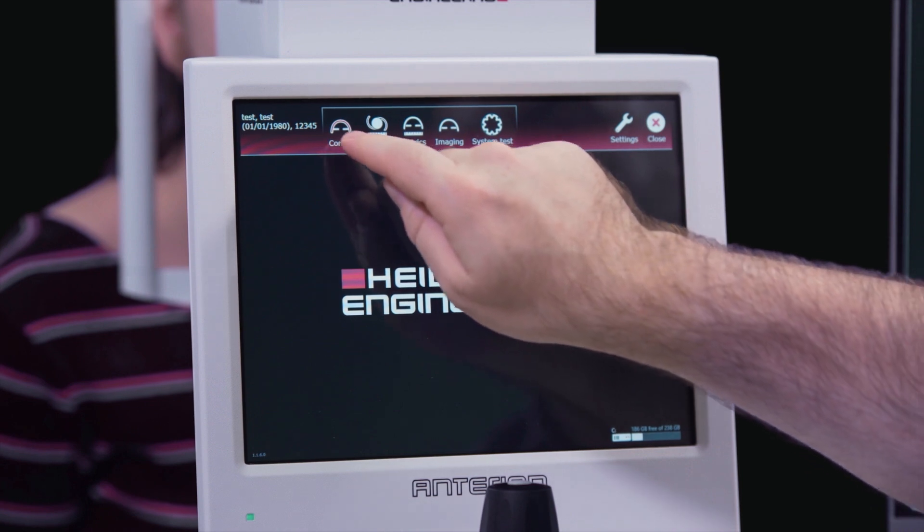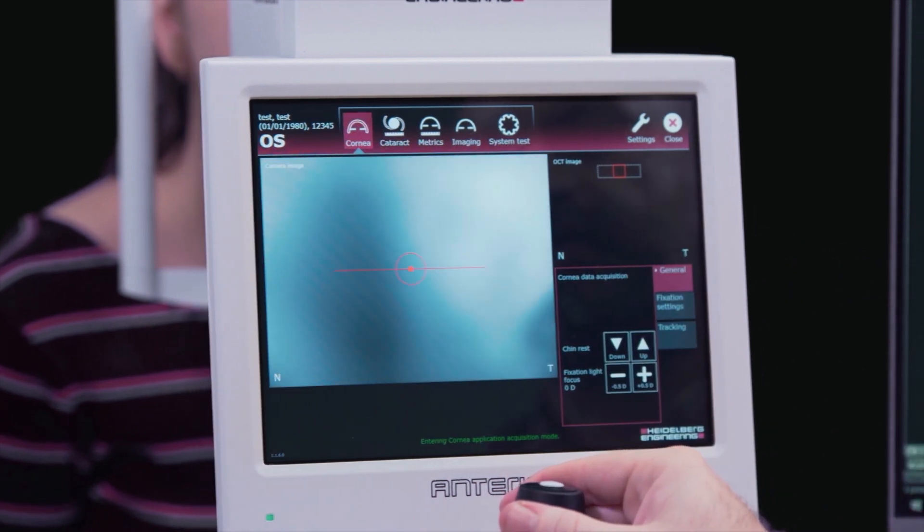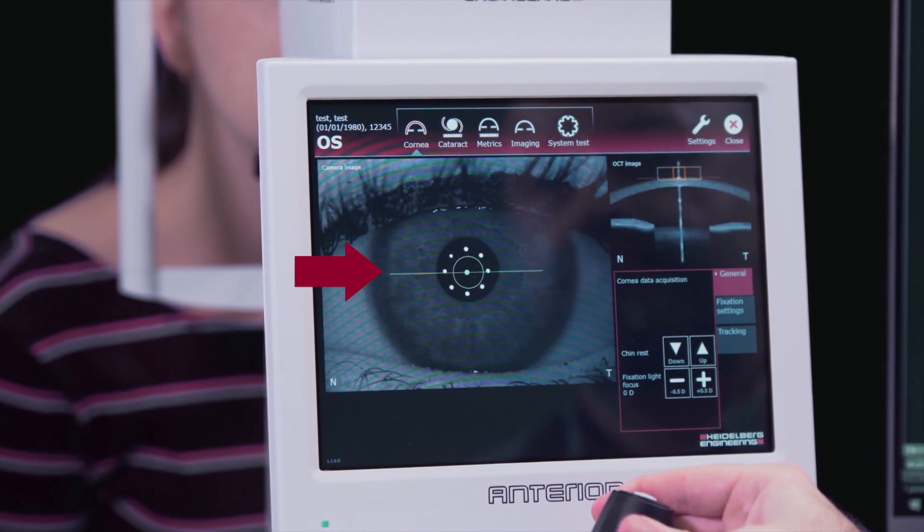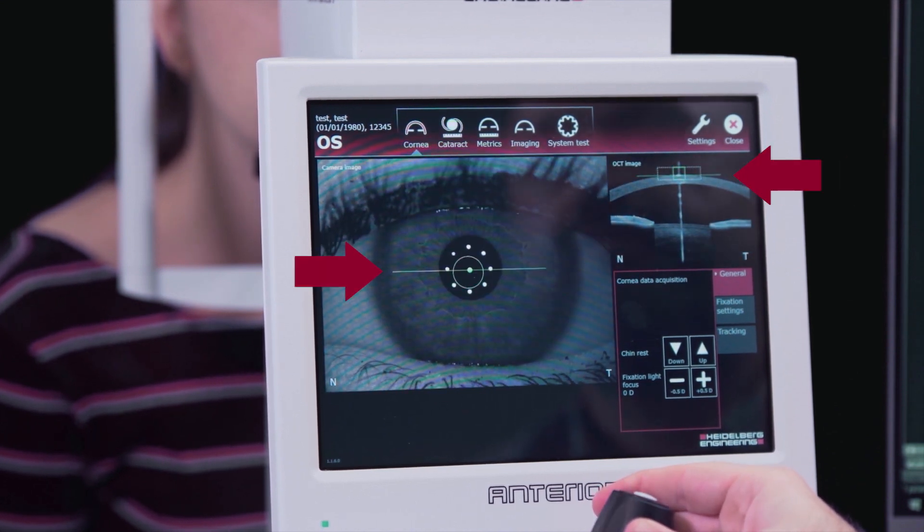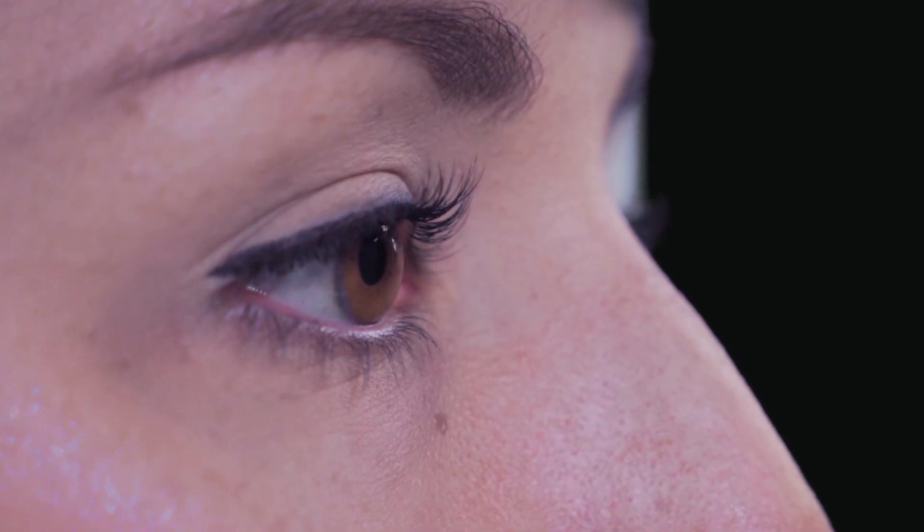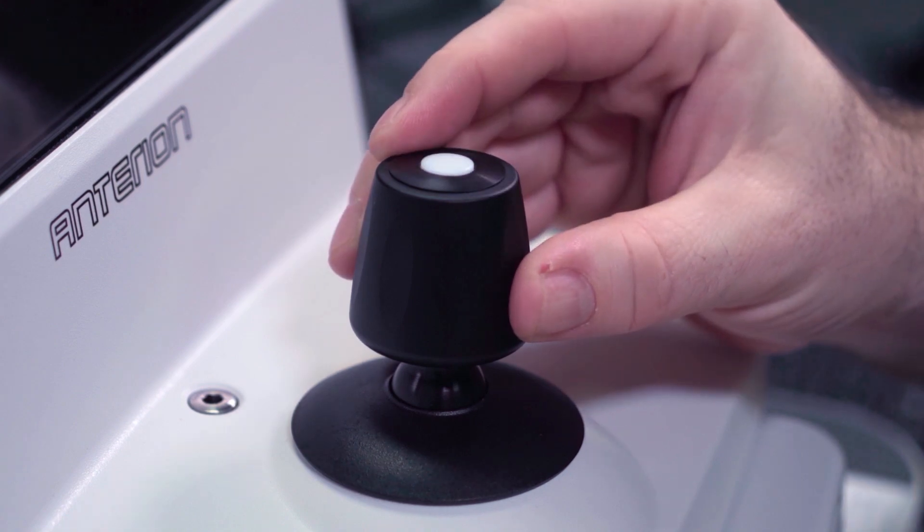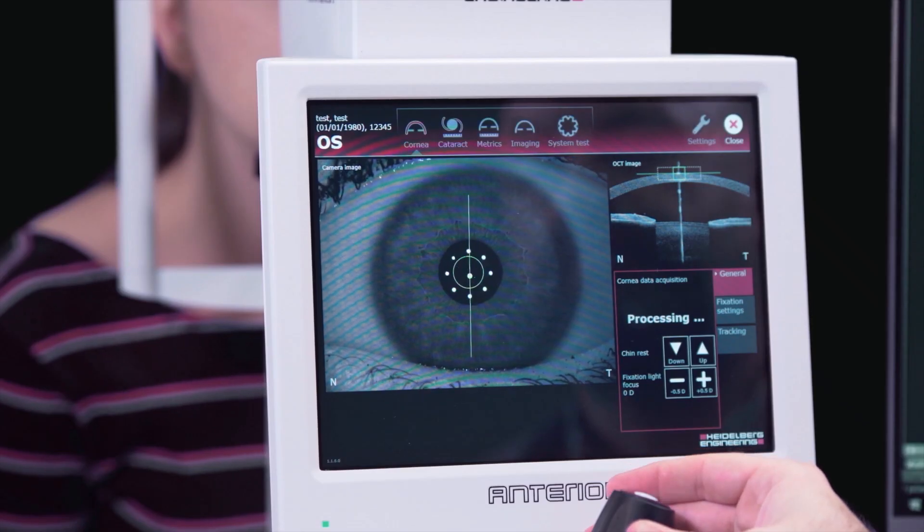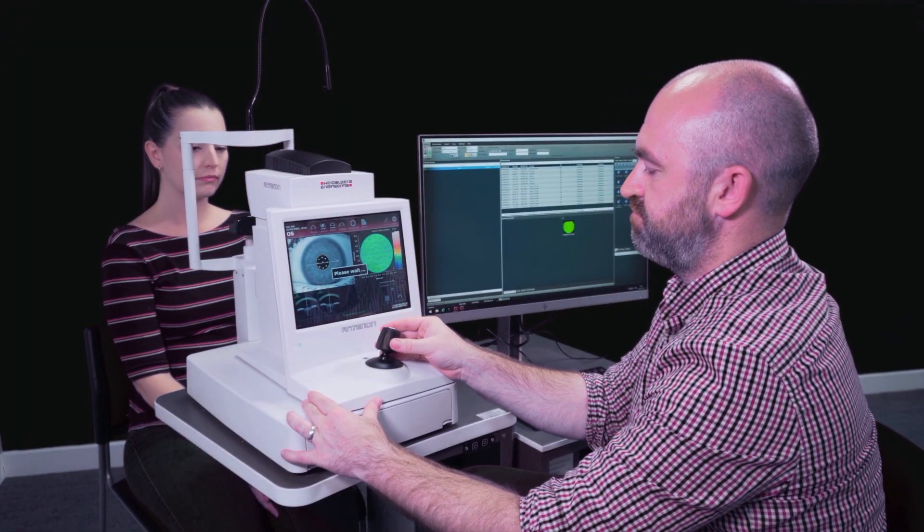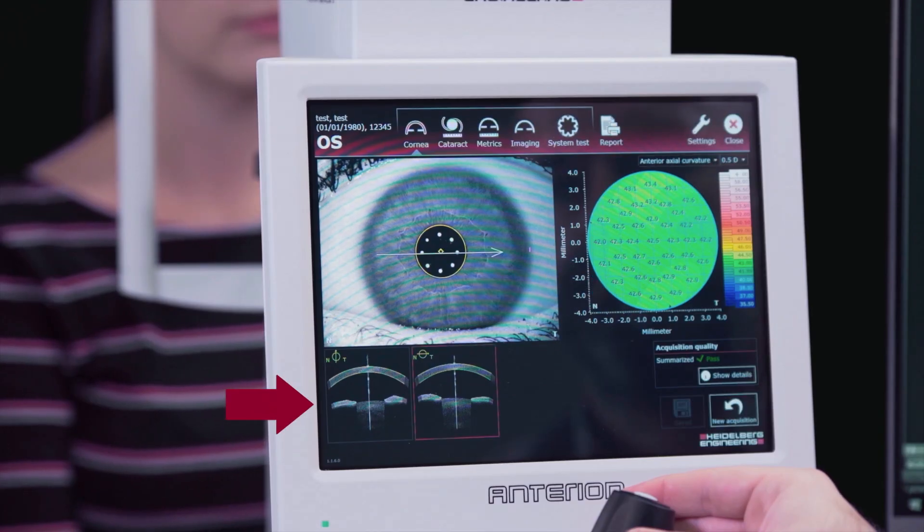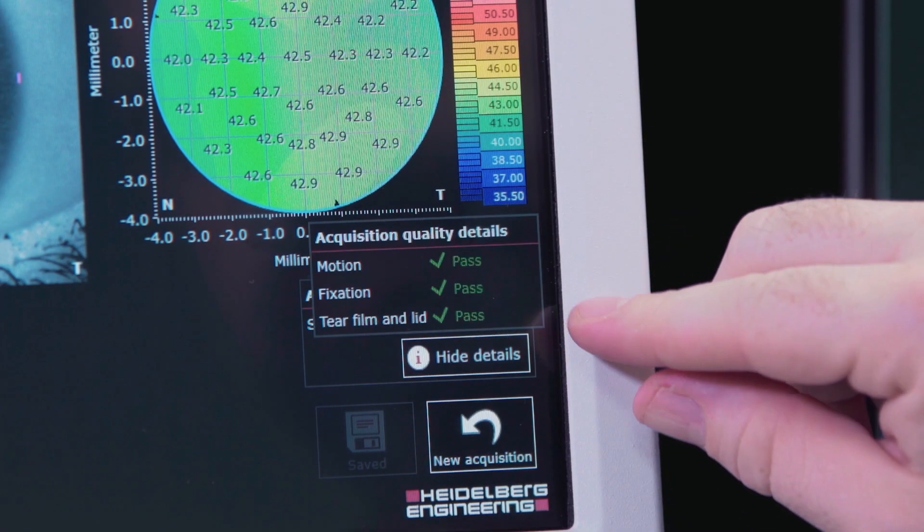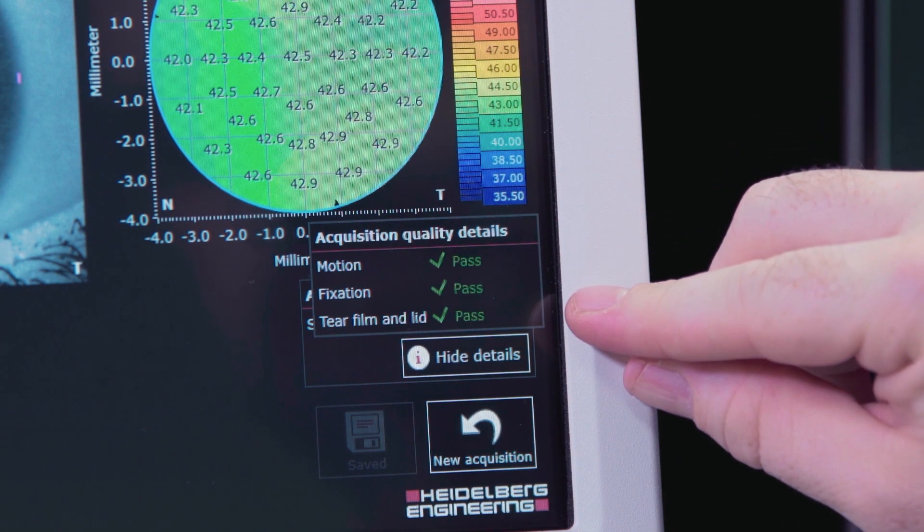Press the cornea app on the touch screen. Align the patient's eye in the camera image and OCT image window until the horizontal lines turn green. Ask the patient to blink and open wide before pressing the joystick button to acquire the image. Check the OCT corneal boundaries are adequately segmented before checking the acquisition quality summary, and repeat if required.